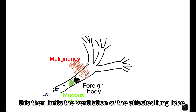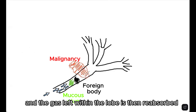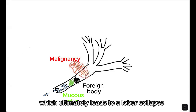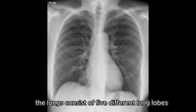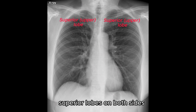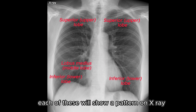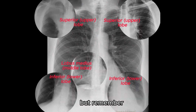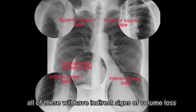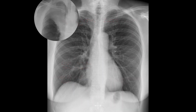This then limits the ventilation of the affected lung lobe, and the gas left within the lobe is then reabsorbed, which ultimately leads to a lobar collapse. The lungs consist of five different lung lobes: superior lobes on both sides, inferior lobes on both sides, and the lobe of the medius on the right side. Each of these will show a pattern on x-ray when collapsed, but remember all of these will have indirect signs of volume loss.